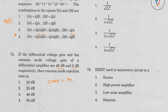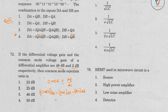CMRR in dB equals AD in dB minus AC in dB. The differential voltage gain is 48 dB and the common gain is 2 dB, so the answer is 46 dB.